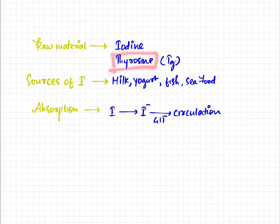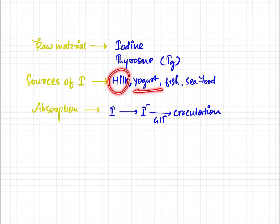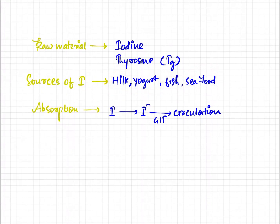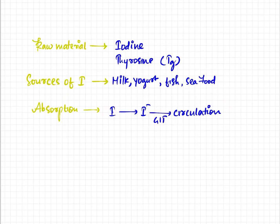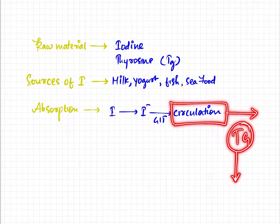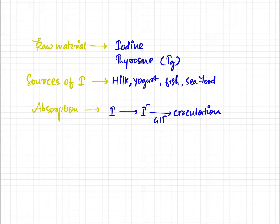The tyrosine is already present in the body in the form of thyroglobulin and is also taken in through proteinaceous food. The sources of iodine include dairy products, milk, yogurt, seafood, and fish. Iodine absorbed in the body is converted into iodide, and this iodide anion is absorbed via the gastrointestinal tract into the circulation, where it is trapped by the thyroid gland and used for thyroid hormone synthesis.